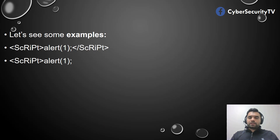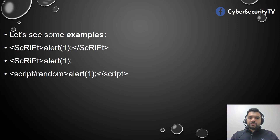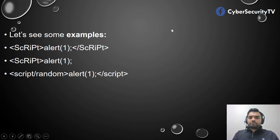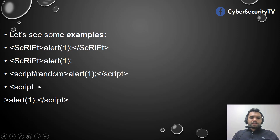The third option is you write the script tag but also insert a random string inside it. This way the filter doesn't recognize it as a payload pattern it's looking for and allows it through. The fourth one is you write the script tag but put the less-than sign on its own line using a newline character, then insert your payload — this has actually worked several times as a bypass technique.